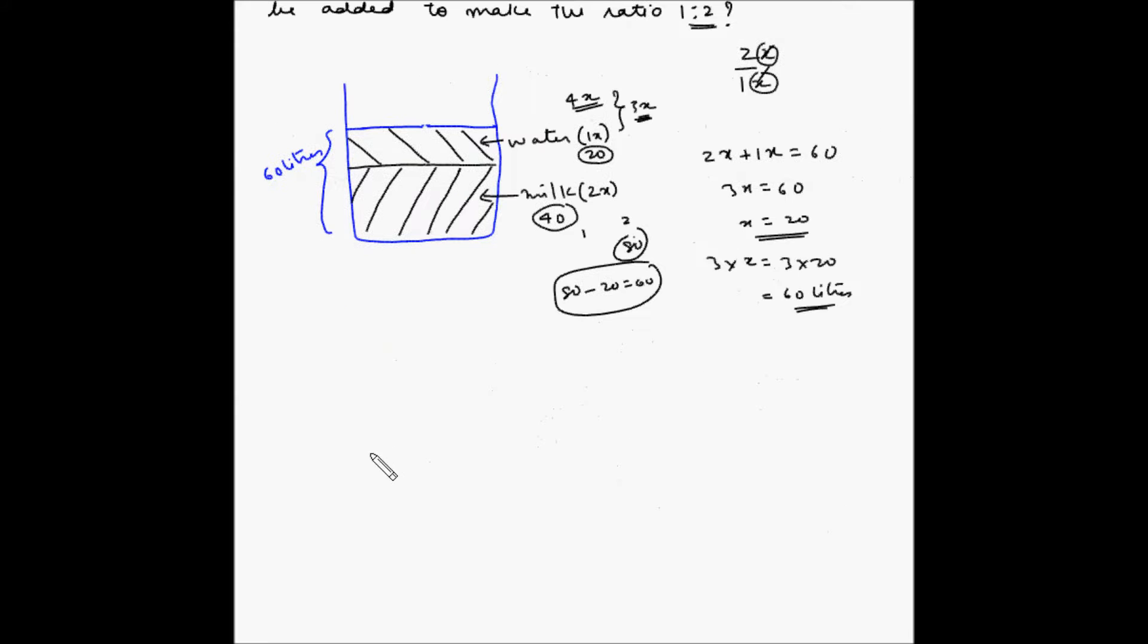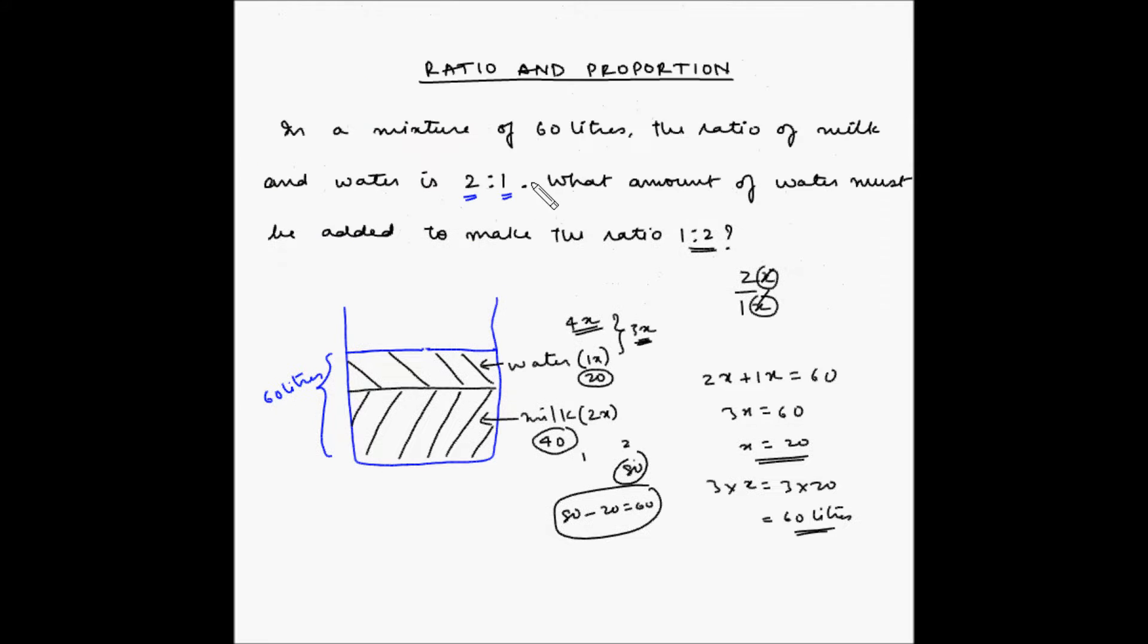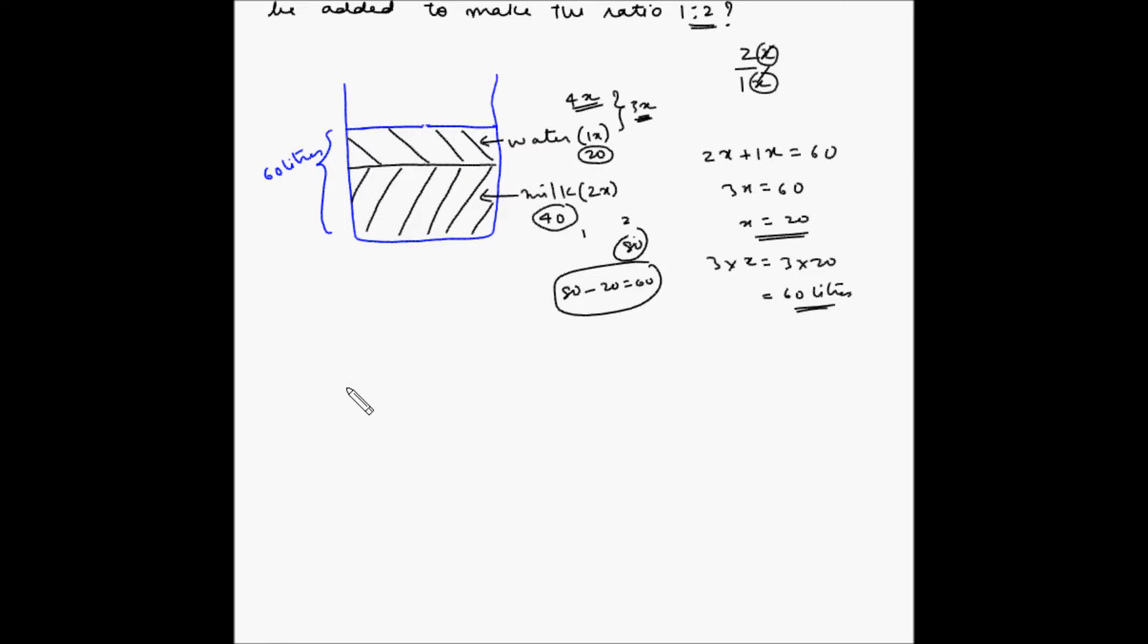Let us look at another way of solving this. So, we have been given that 2 parts out of 3 is milk. So, 2 parts out of 3 multiplied by the total quantity 40 is the portion of milk. So, this becomes 40 liters and water is 1 part out of the total 3 parts.